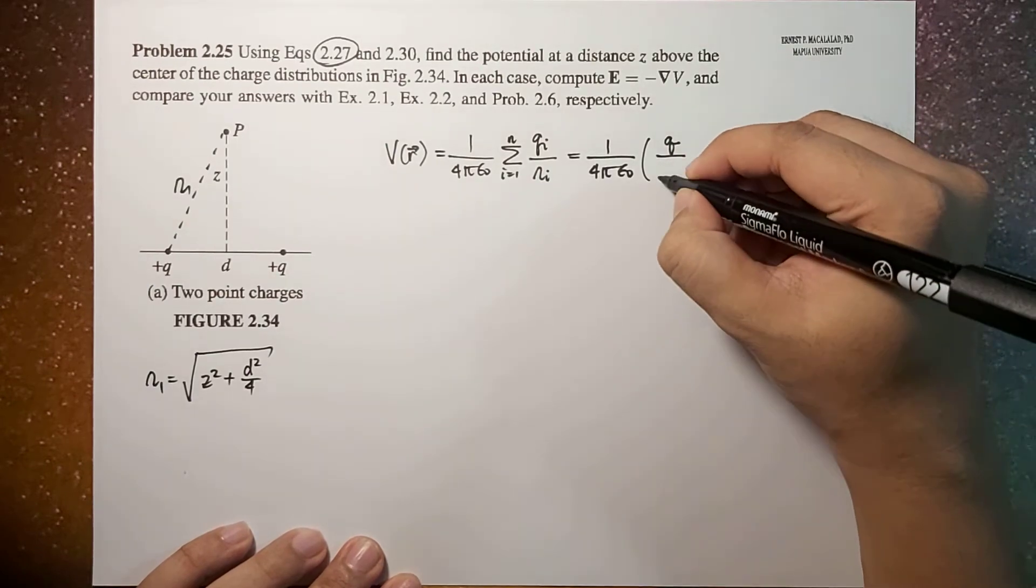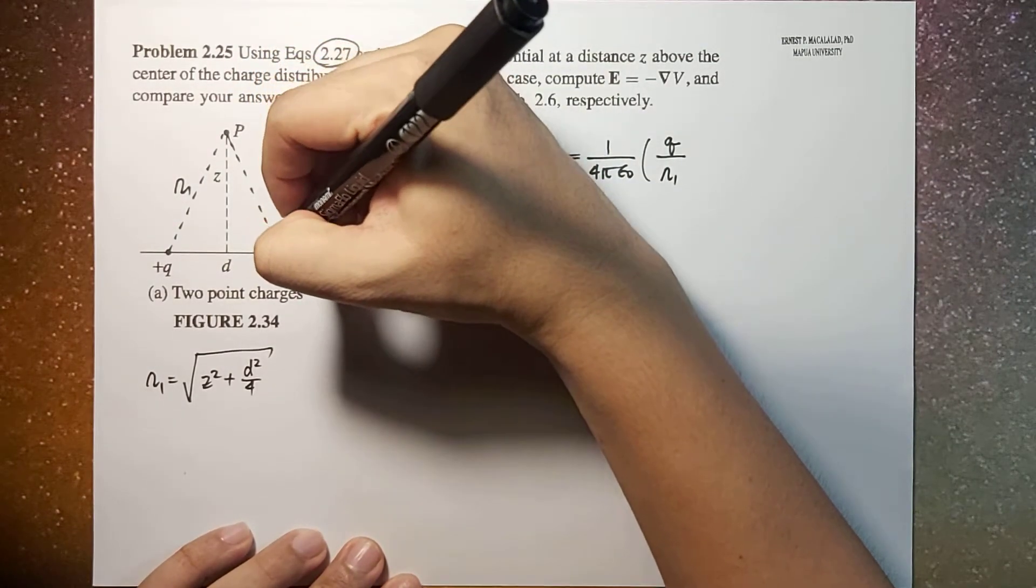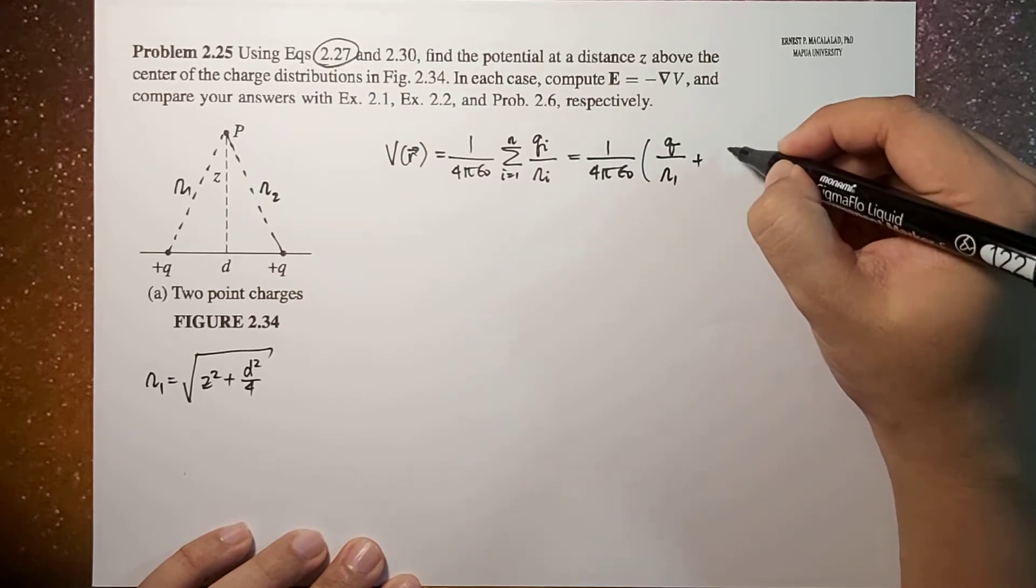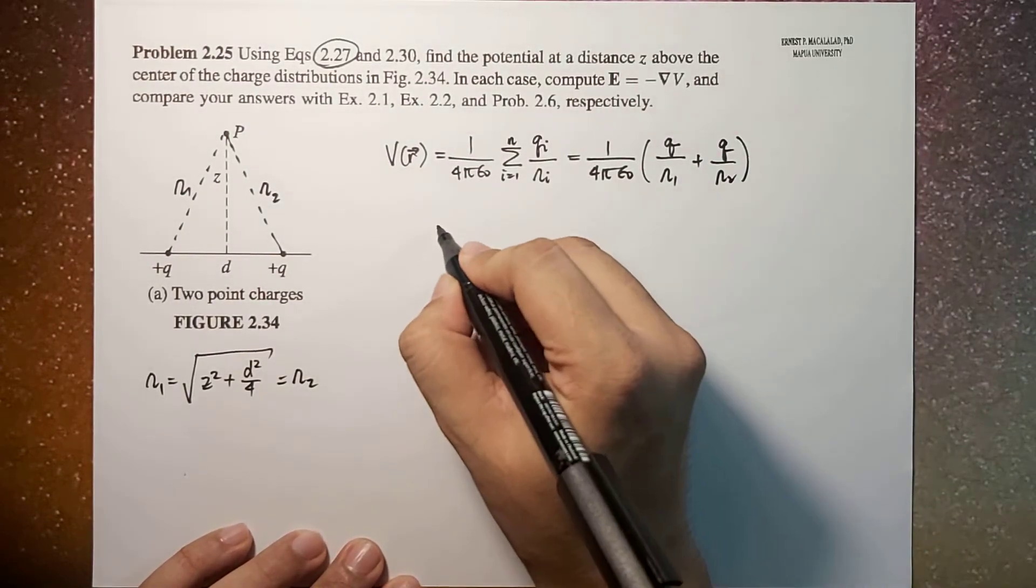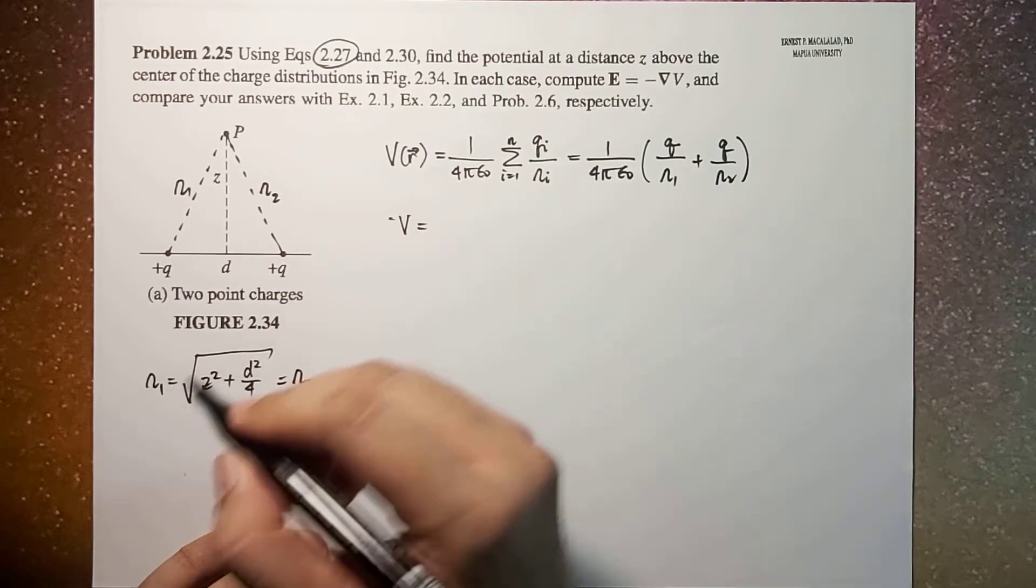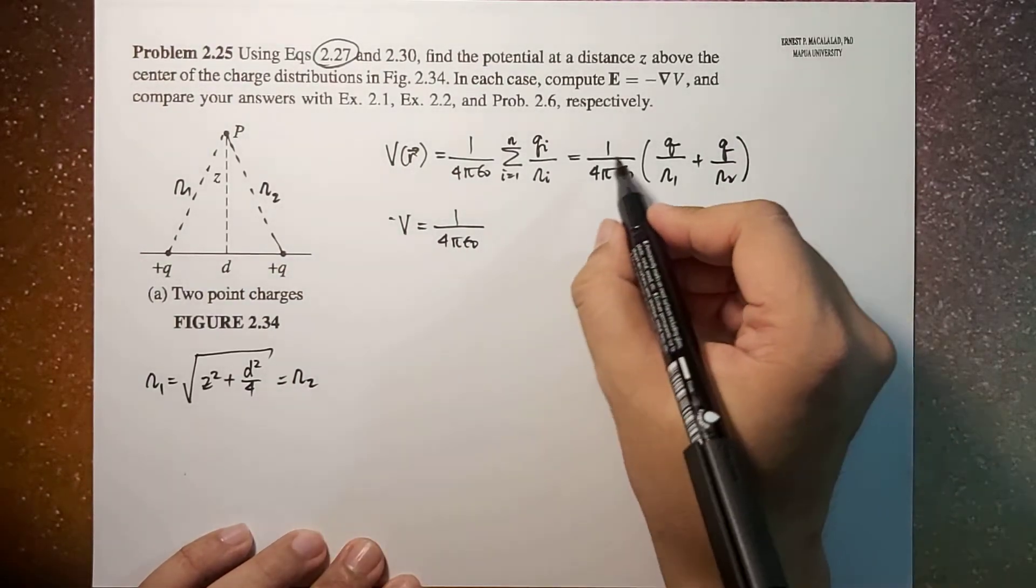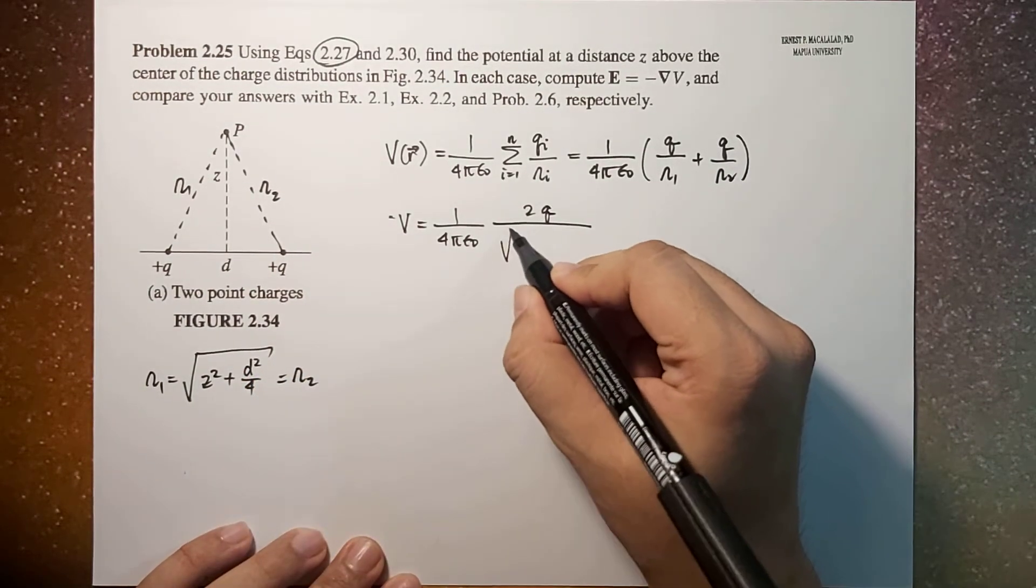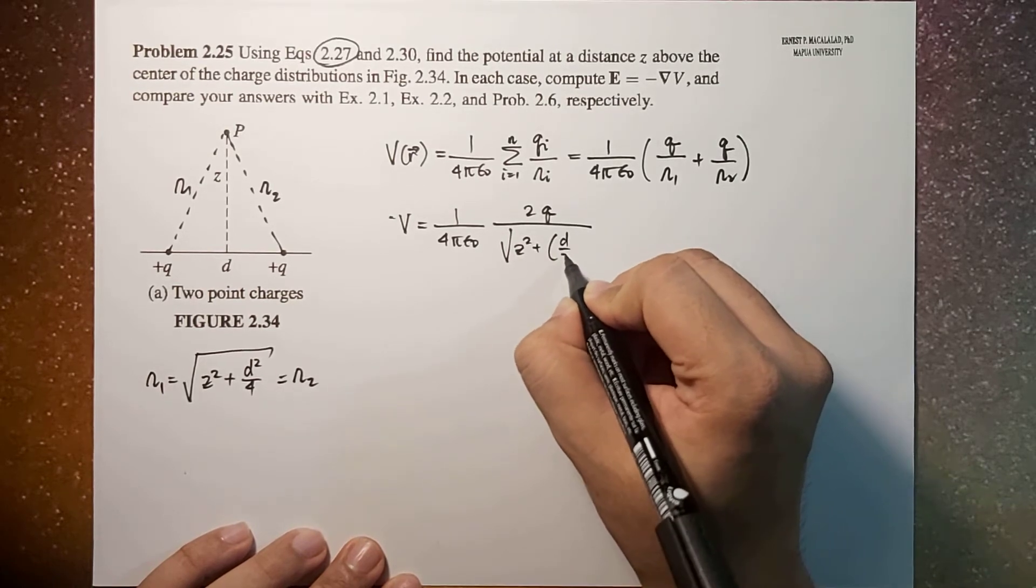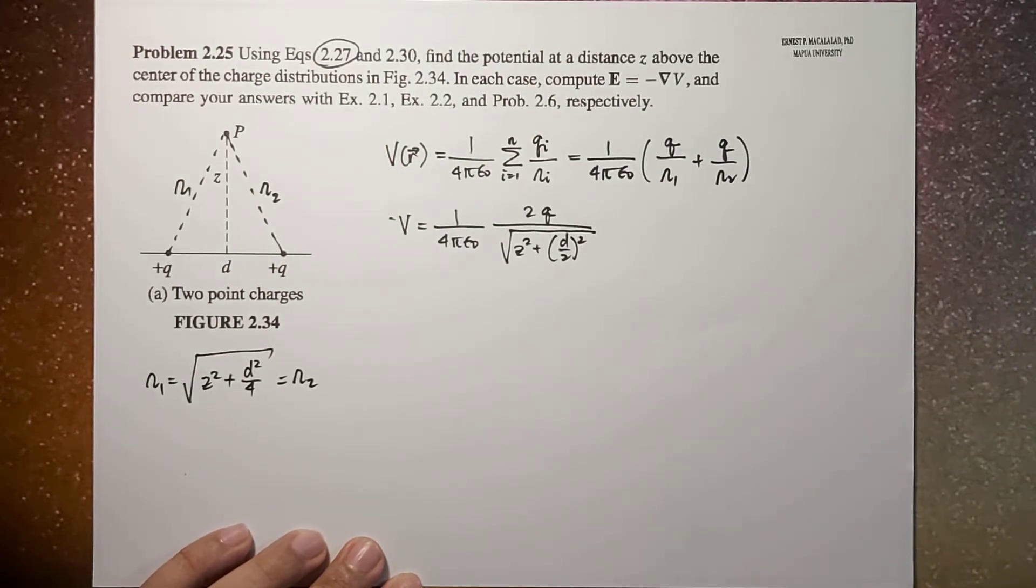So this is R1. By symmetry, this is the same as R2. So this is plus Q over R2, because R1 equals R2. Therefore, the total potential will now be equal to 1 over 4 pi epsilon naught times 2Q over square root of Z squared plus D over 2 squared. Simple, right? So that's the potential.